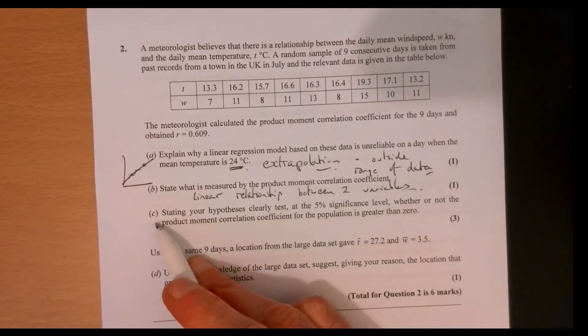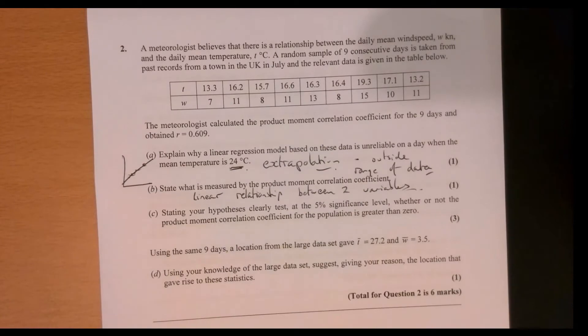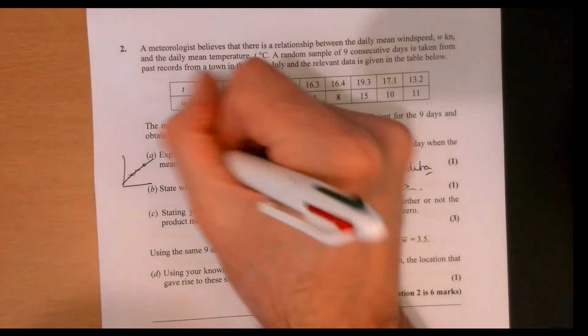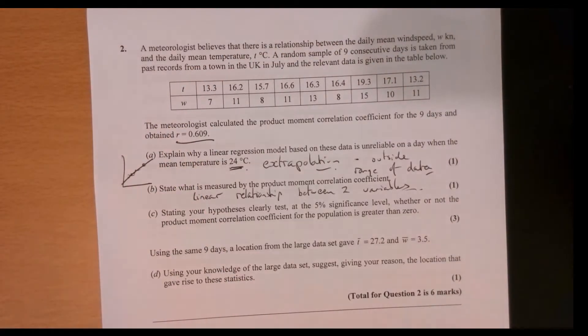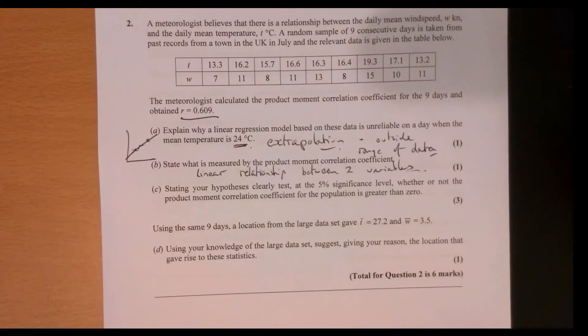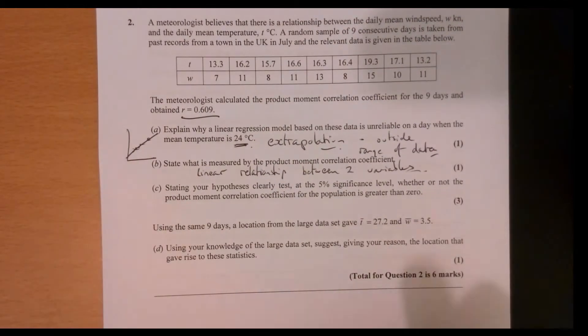And part C. So this wants us to test this. OK, so it's given us a correlation value. Well, kind of how significant is that? What does that actually mean? And we need to make sure that we set this out properly. So what we need to write down.